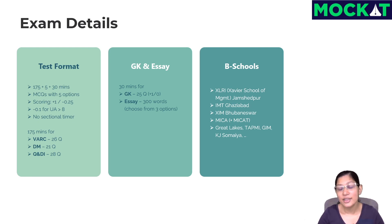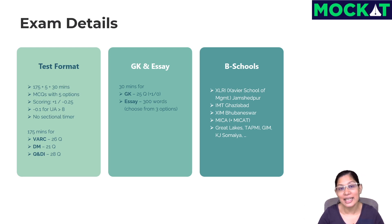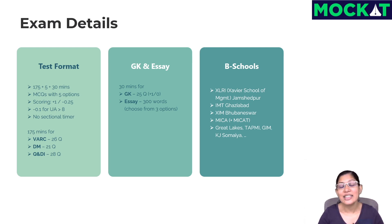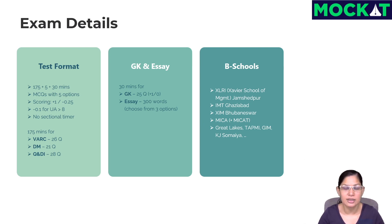Remember that the most important thing is the core 75 questions — the ZAT percentile comes from there. GK and SA do not influence the percentile. Even at XLRI, which does receive your GK answers and essay, there's no separate scoring for these.